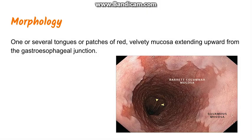Now we will understand the morphology. This picture shows the endoscopic view, where we can see a pale area and a reddish area. The pale area is the stratified squamous epithelium and the reddish area is the metaplastic epithelium. In Barrett's esophagus there are several tongue-like patches of red velvety mucosa which extend upward from the gastroesophageal junction, visible easily on endoscopy.